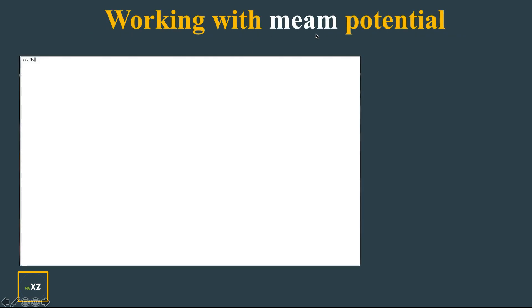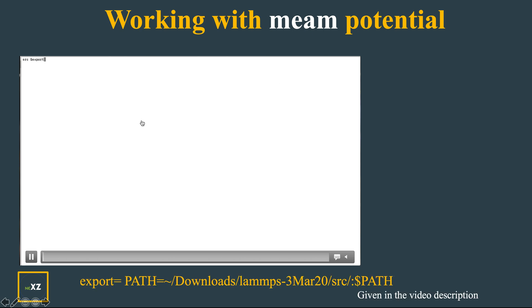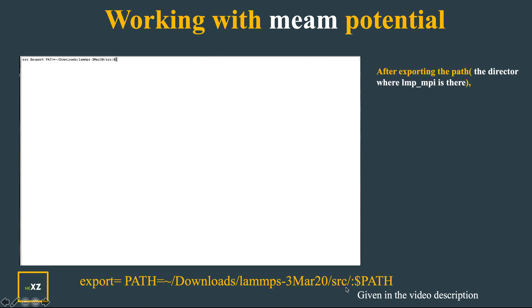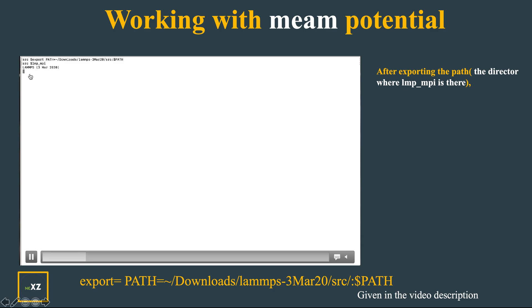Now, working with the MEAM potential. I export the path of the downloads LAMPS source folder so that this path is included in my Unix PATH shell variable. This will help in locating lmp_mpi from anywhere. Now when I press lmp_mpi directly it runs. I go back one folder and press lmp_mpi again — it runs. The benefit of exporting the path is that you can locate lmp_mpi from any directory.